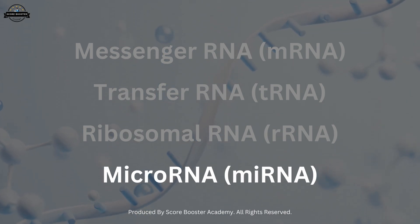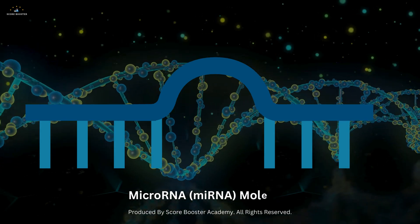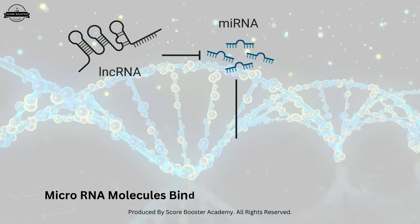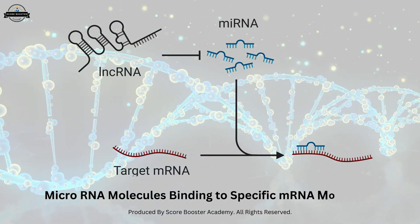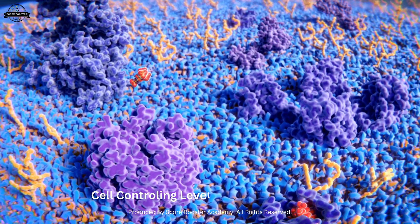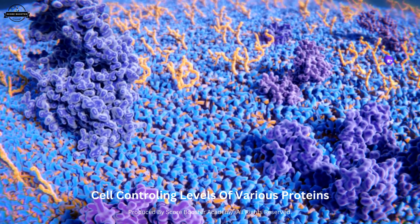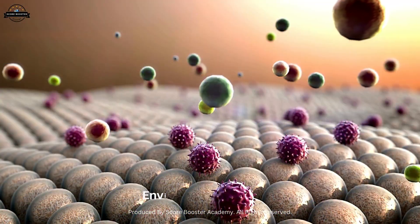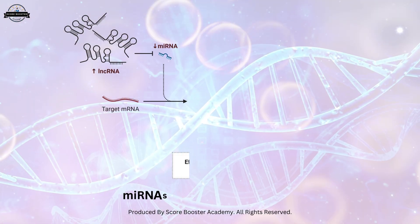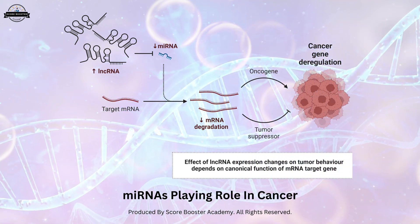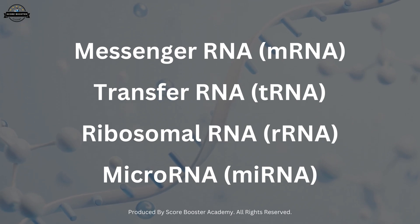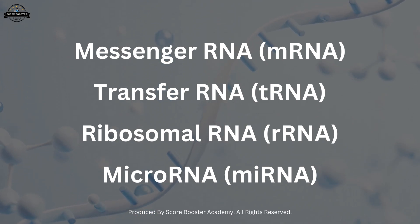Micro RNA is a small RNA molecule involved in the regulation of gene expression. Micro RNA molecules bind to specific mRNA molecules and inhibit their translation into proteins. This regulatory mechanism allows cells to control the levels of various proteins, essential for processes such as development, differentiation, and response to environmental changes. For example, certain micro RNAs are known to play roles in cancer by regulating genes involved in cell proliferation and apoptosis.